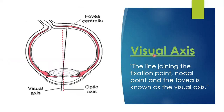Real axis. With the name, you can see it's real axis — that means the axis will originate from the object. The line that is joining the fixation point, or the point on which you focus, to the nodal point — which is present in the center of the lens — and the fovea, where the image is made. The line joining the fixation point, nodal point, and the fovea is the real axis.